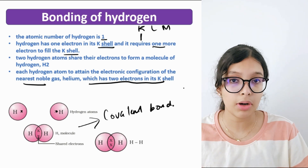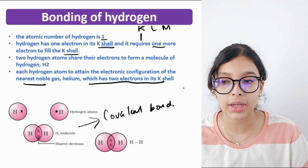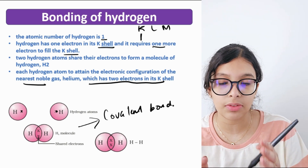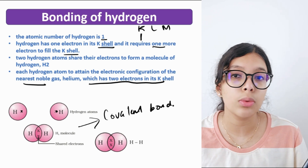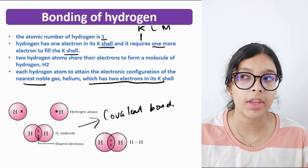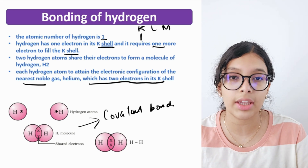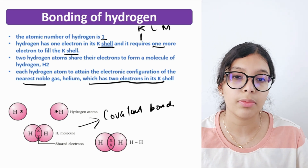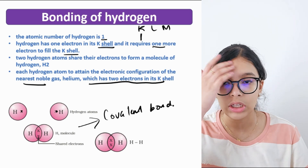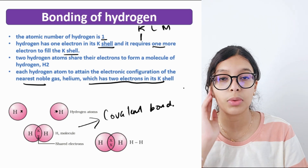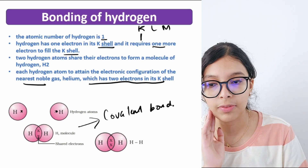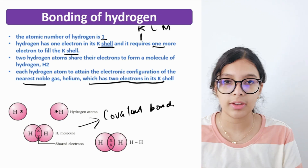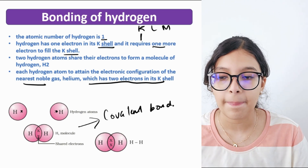One hydrogen contributes one electron and another hydrogen contributes one electron, forming an H2 molecule by sharing. Each ends up with two electrons in its shell, achieving a more stable electronic configuration. This is a basic example of a covalent bond.